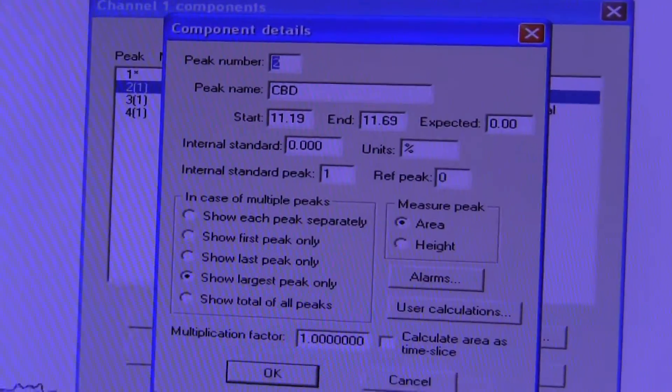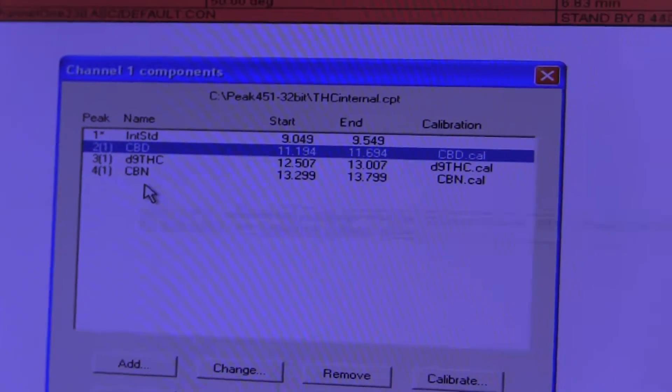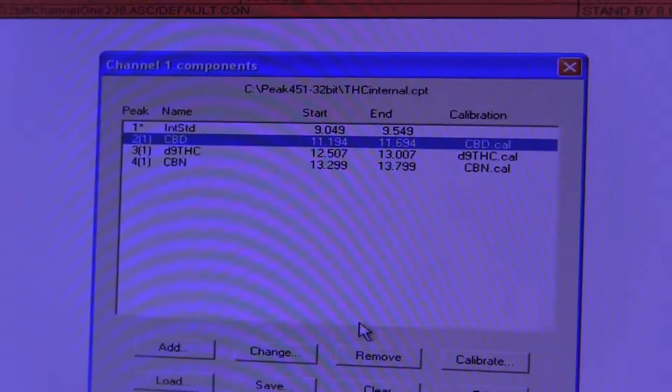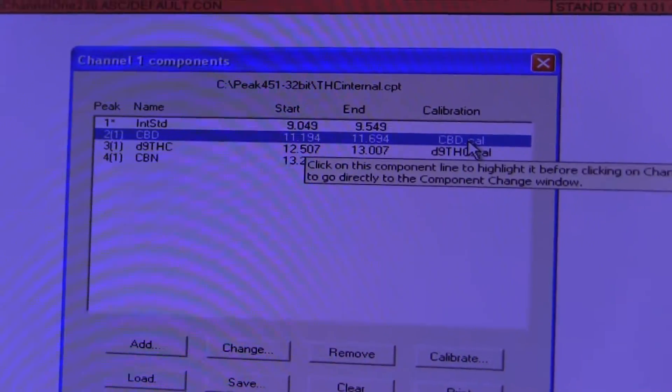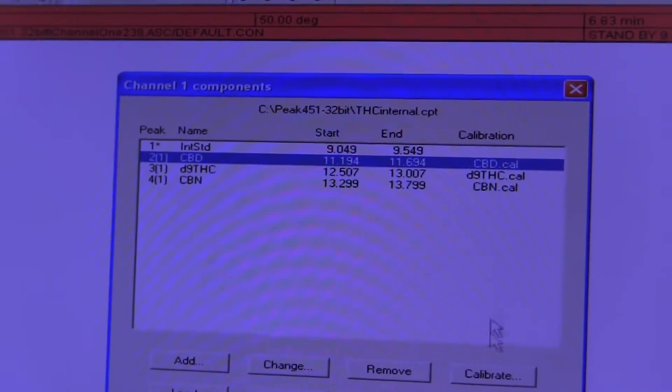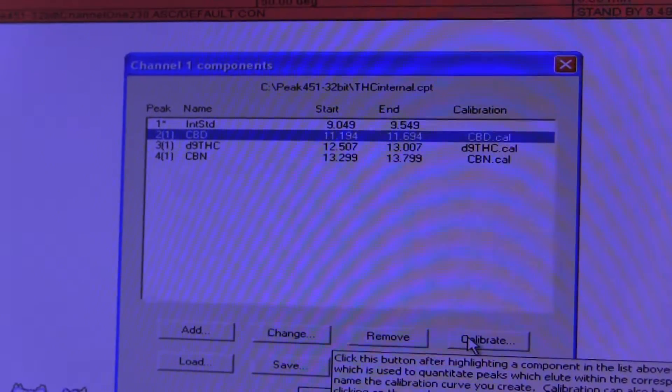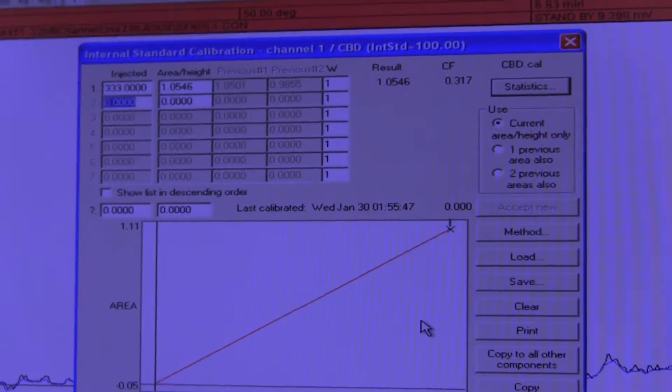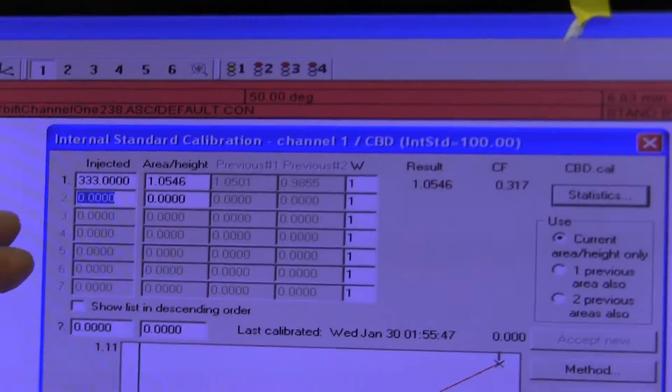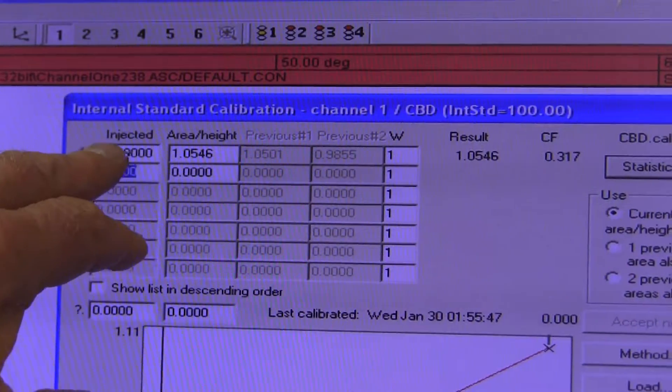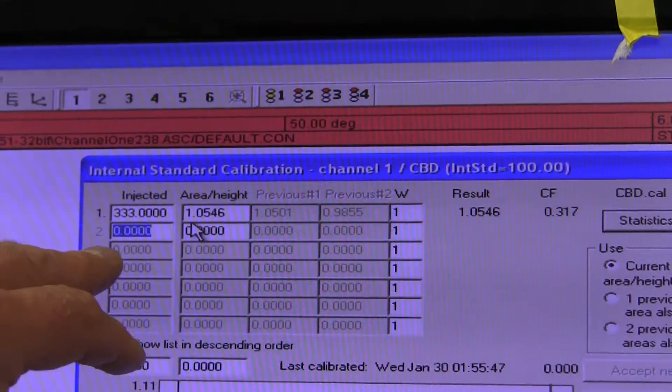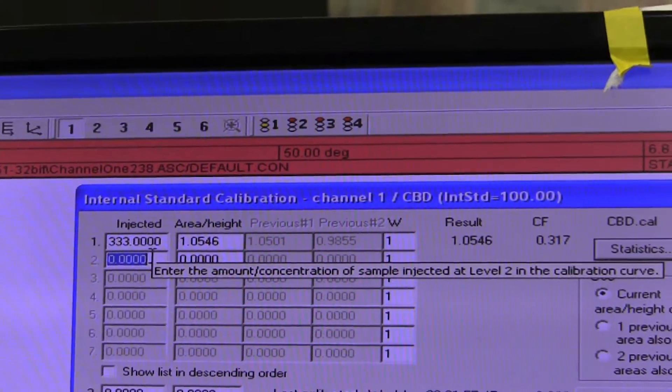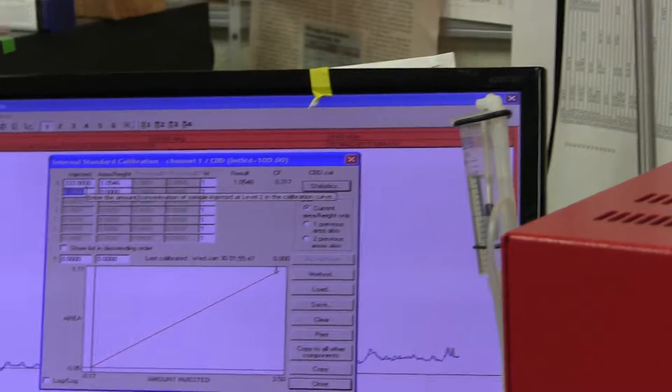Here in the software now, we have our list of components. For instance, for CBD, the name of the calibration curve for CBD is CBD.cal. When we look at that calibration curve, you can see that the amount we're putting in this first column is 333, which is the 333 nanograms per microliter that we all agreed was what was in this bottle.